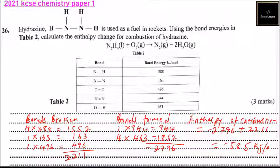So that is the enthalpy change for combustion of hydrazine. That is the power that will be produced by the combustion. So that's how you work out that and you get three marks.